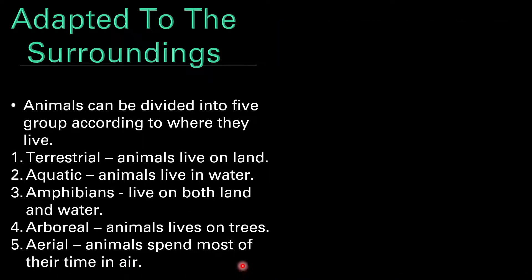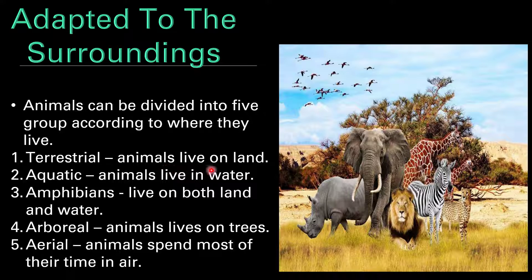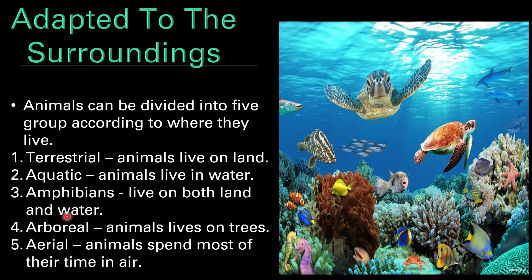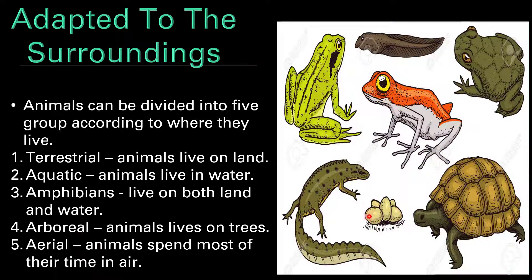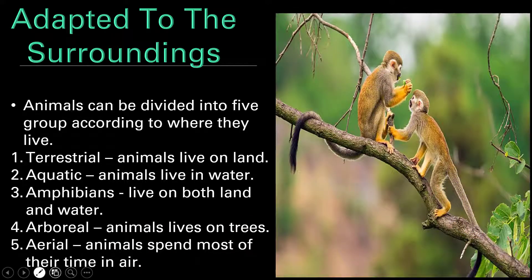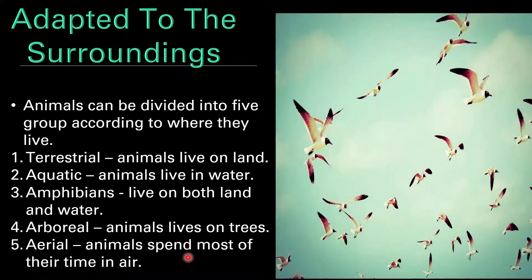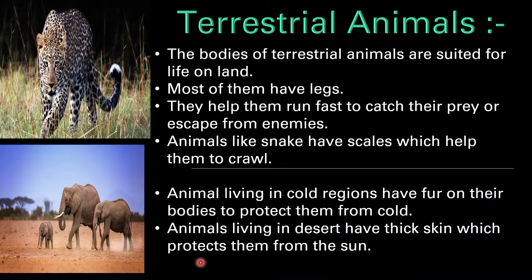Animals live everywhere on earth — on plain land, in forests, in the ocean, deep inside the ocean where it's totally dark, and on high mountains always covered with snow. Animals that live in different places are different from each other. According to where they live, animals can be divided into five groups: terrestrial animals that live on land, aquatic animals that live in water, amphibian animals that live on both land and water, arboreal animals that live on trees, and aerial animals that spend most of their time in air, like birds.